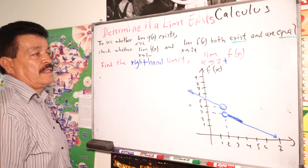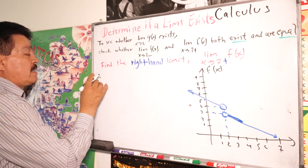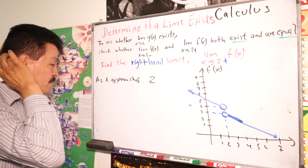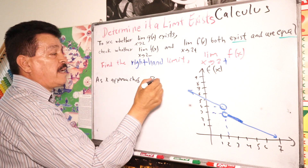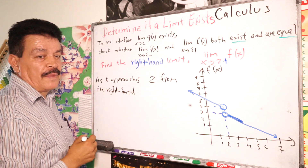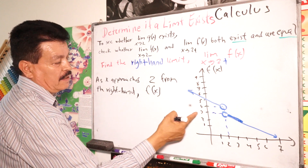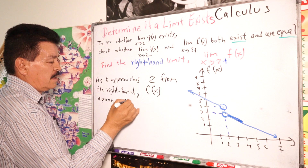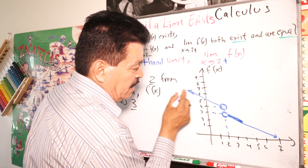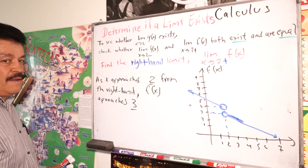So our problem: find the right-hand limit of f of X when X approaches 2 from the right. As X approaches 2 from the right, f of X approaches 3. We are now talking about this right-hand graph, as opposed to the left-hand one above.